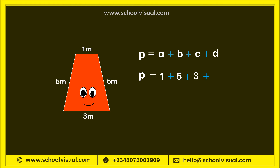D, which is 5. So when you add them all up, we get 14 meters. Very easy, right? Good.